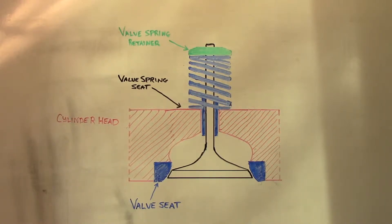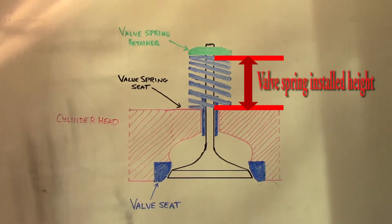Valve spring installed height is the distance between the top and the bottom of the spring when it is installed in the cylinder head. This dimension determines the valve spring force holding the valve closed.